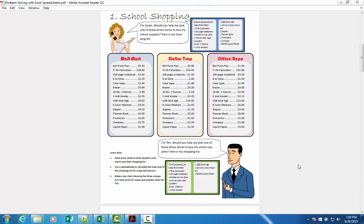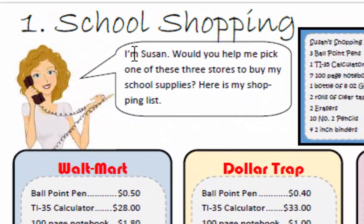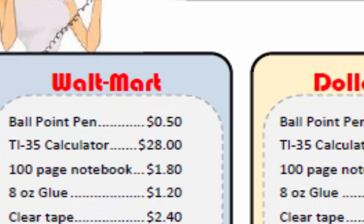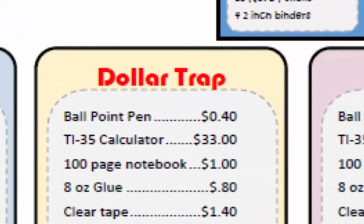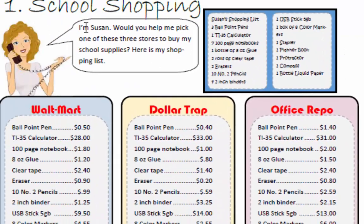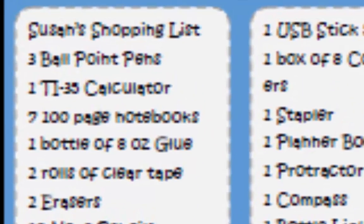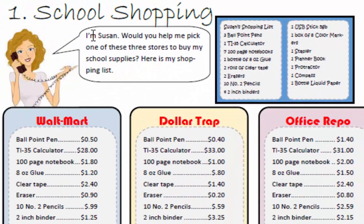In this first Excel problem, we're going to go on a shopping trip. Susan says: would you help me pick one of these three stores to buy my school supplies? To the right of the shopping list, you can see all the items Susan would like to buy. Her choices are Walmart, Dollar Trap, and Office Depot, with each price listed below and the number of items on her shopping list. For instance, three ballpoint pens at Walmart will cost three times 50 cents, or $1.50. This is a large, complicated shopping list — a perfect problem to solve using an Excel spreadsheet.